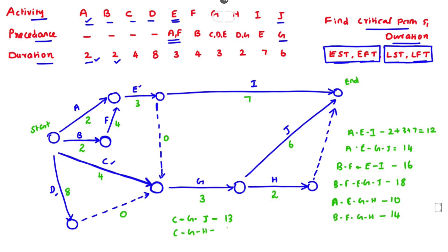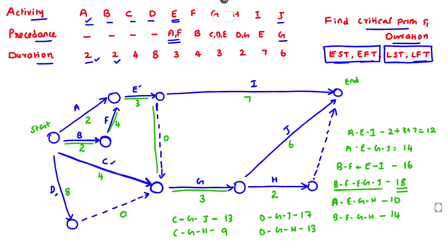Path D–G–H: 8 + 3 = 11, plus 2 = 13 days. The maximum duration among all paths is 18 days, which belongs to path B–F–E–G–J. We draw a double line along B–F–E–G–J to indicate this is the critical path. The critical path duration is 18 days.